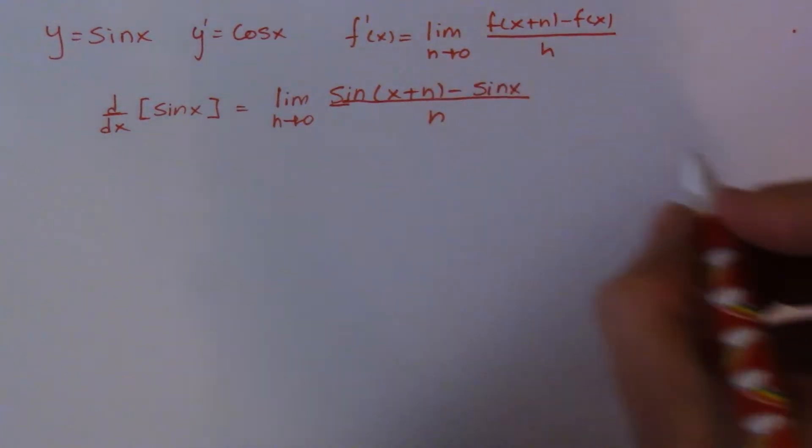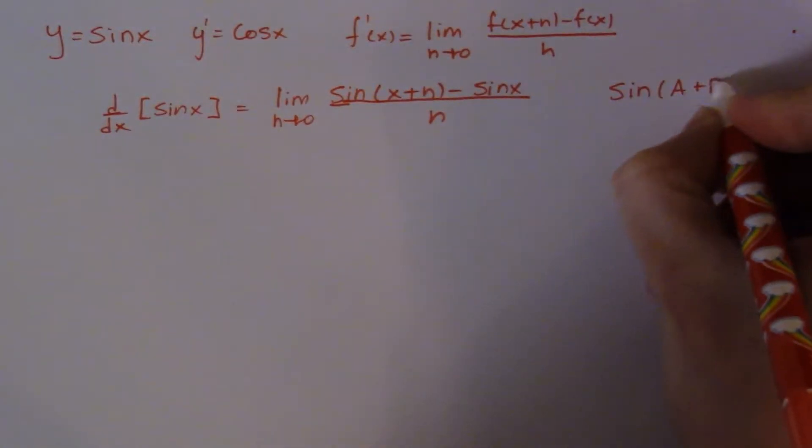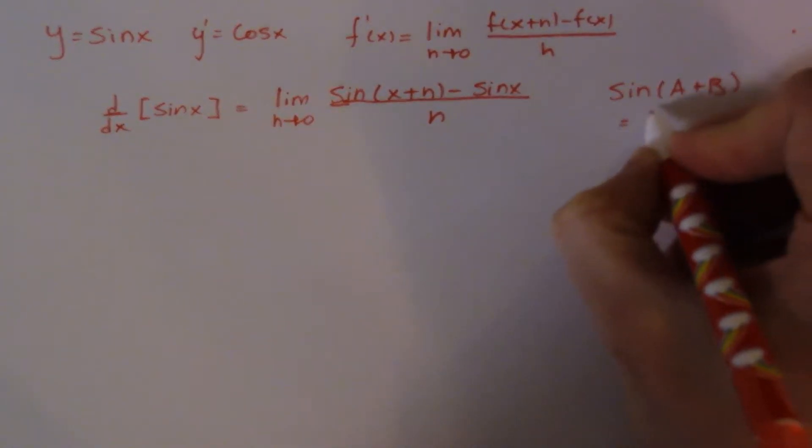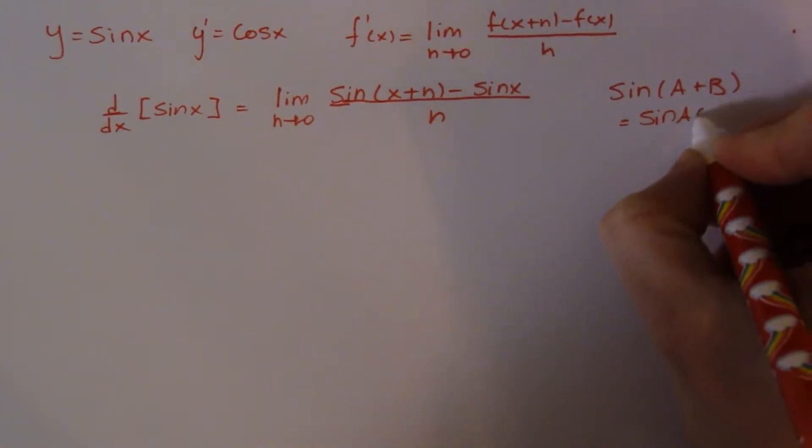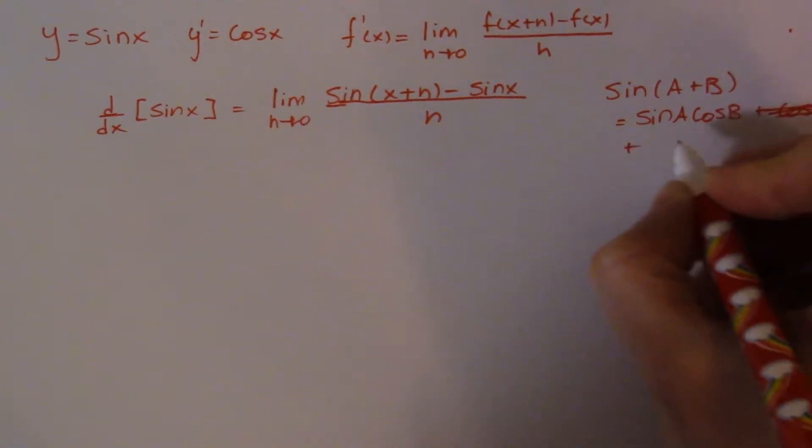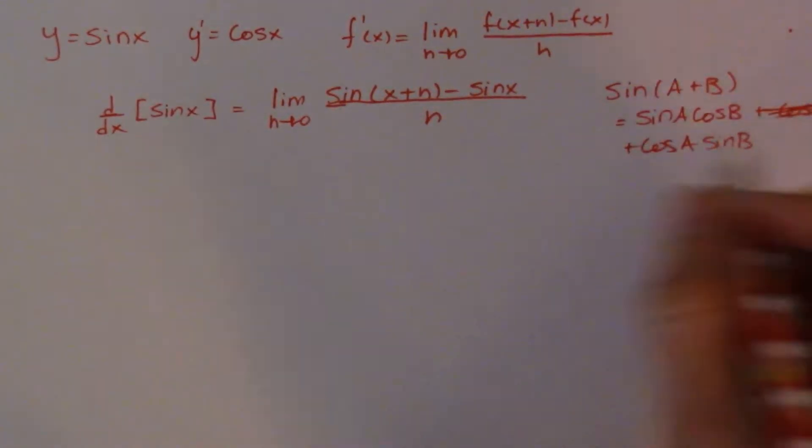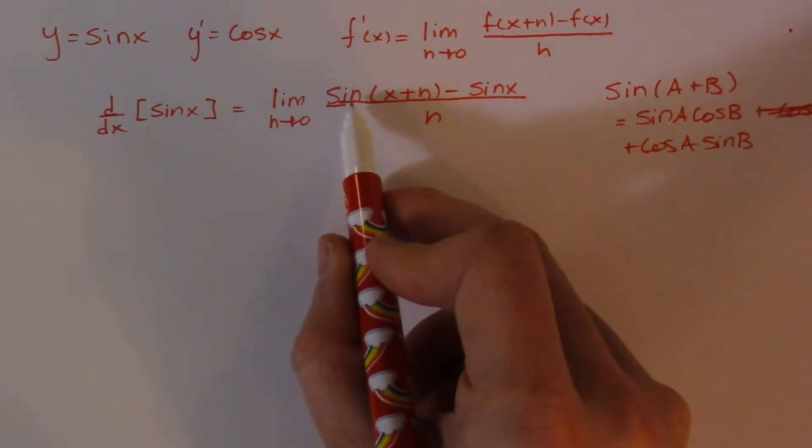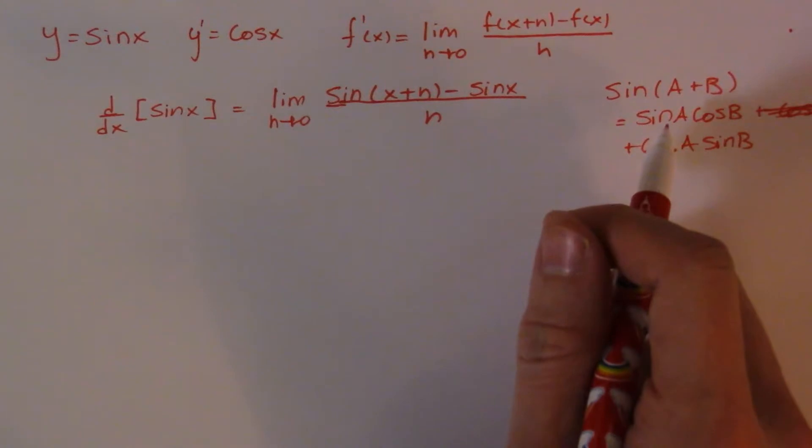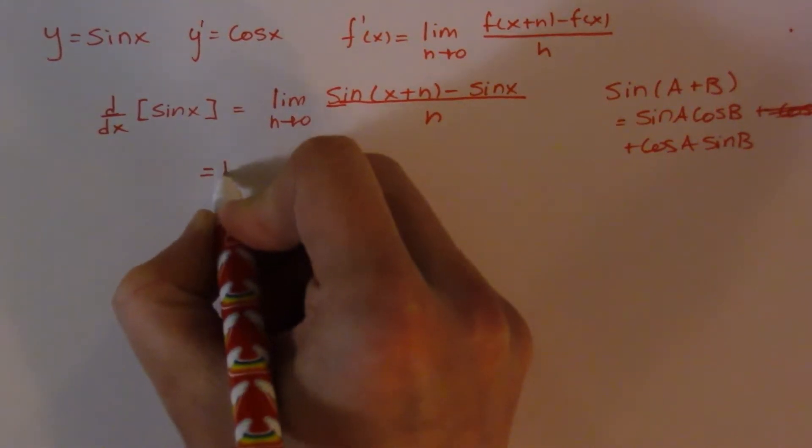The next step is to recognize that this guy right here, sine of x plus h, is the same as the sum formula, sine of a plus b, which is equal to sine of a times cos of b plus cos of a sine of b. So I'm just going to replace this formula, sine of x plus h, with this formula. It's called the sine sum formula. You've probably done sum and difference formulas somewhere in math along the way, in your pre-calculus.